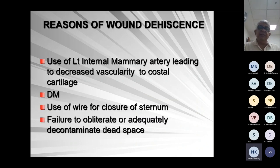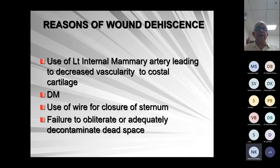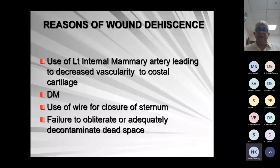Reasons for wound complications post-CABG: use of the internal mammary artery — specifically the left internal mammary artery — for revascularization of the heart decreases vascularity of the posterior chest wall on the left side. Diabetes mellitus is usually common in these patients. Use of wire as a foreign body close to the sternum, and failure to adequately debride or decontaminate necrotic tissue, are also contributing reasons.